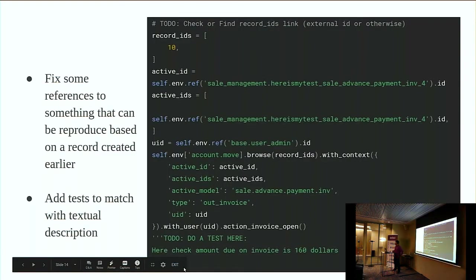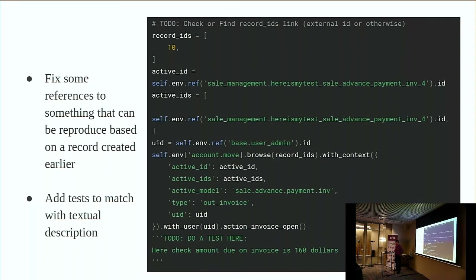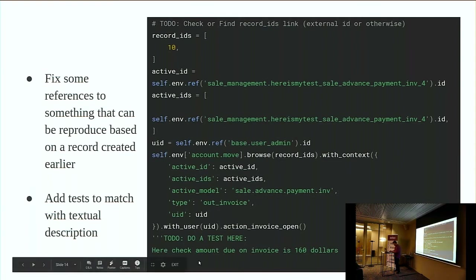The generated code, since it needs a manual pass, has some to-do flags to check whatever is needed. For example, we recorded something on an account.move. In this case, the account.move was generated automatically at some point — the ID is 10. We still have to check and find a path to reference it, to make sure the test can run properly after a second run if the ID is not 10. And wherever we put the flag saying 'I need a test here — test the amount or whatever' — you get a to-do flag saying do the test.